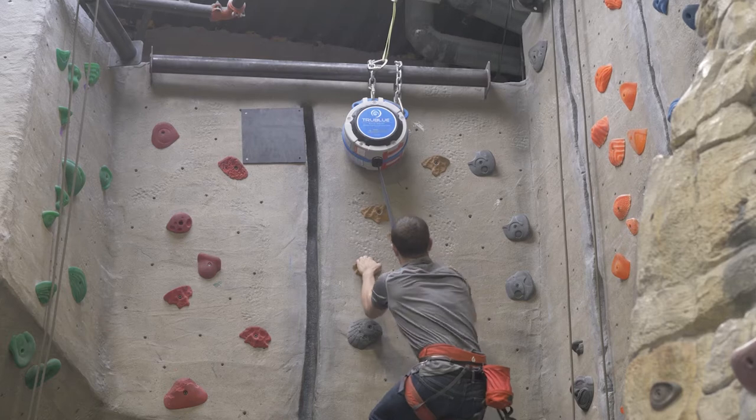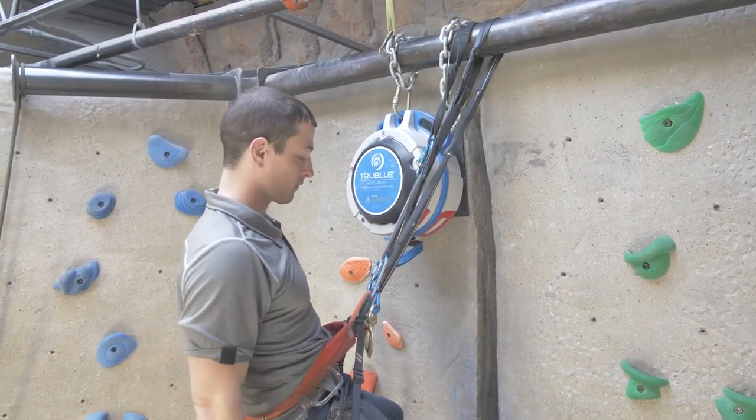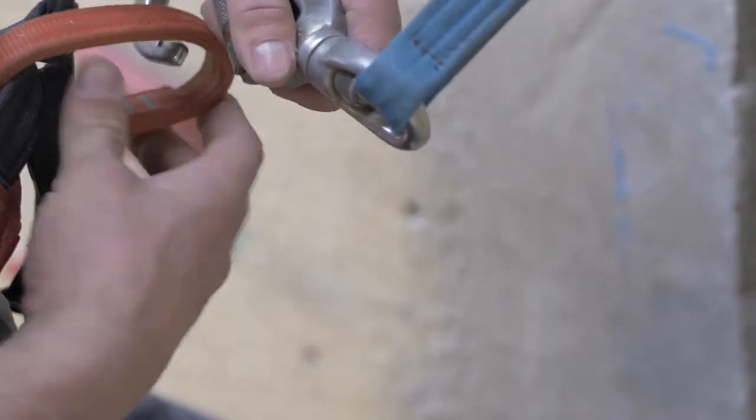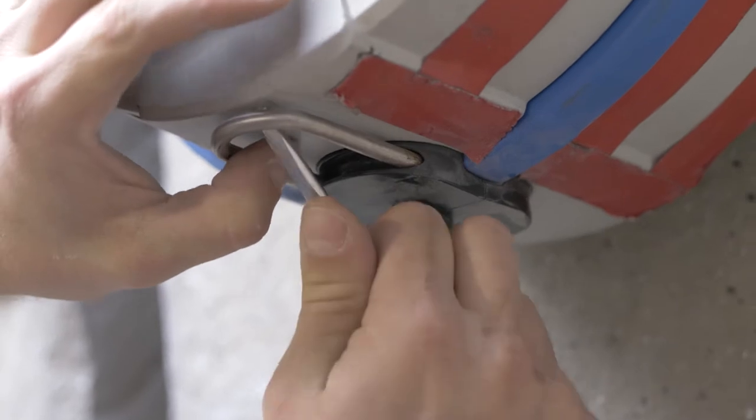Next, clip into the auto belay, climb up to the anchor point and anchor yourself off so that your hands are free. Finally, unclip from the auto belay and ensure you're in a comfortable position. Grab the screwdriver out of your chalk bag.